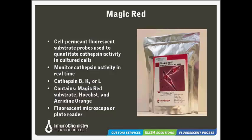With cathepsins involved in so many different areas of scientific study, including apoptosis and as a clear target for future cancer research, ICT has developed its line of MAGIC-RED reagents to help study cathepsin activity. The MAGIC-RED assay kits contain cell-permeant fluorescent substrate probes that can be used to quantitate cathepsin activity in cultured cells. You also have the option to monitor cathepsin activity in real time. At this time, we offer these kits for cathepsins B, K, and L. All MAGIC-RED kits contain the MAGIC-RED substrate, Hoechst to stain nuclei, and acridine orange to identify lysosomes. Results can be analyzed using a fluorescent microscope or fluorescent plate reader.